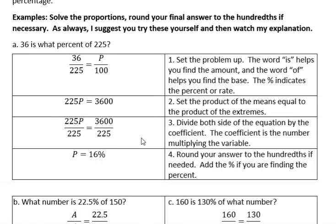Once you set the proportion up, you solve it the same way you've solved other proportions. That is cross multiply: the means, 225 times P, and the extremes, 36 times 100. That's 3600. Once you have those means equal to the extremes, you divide by the coefficient.